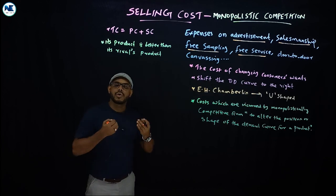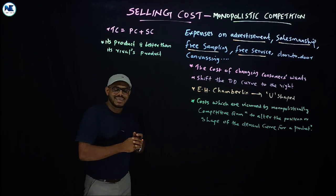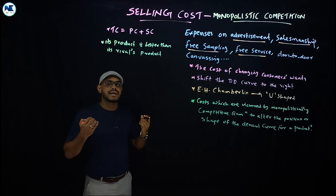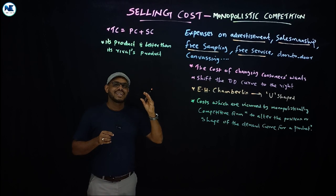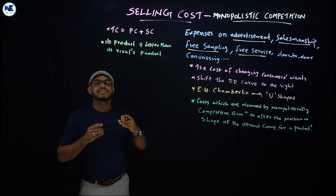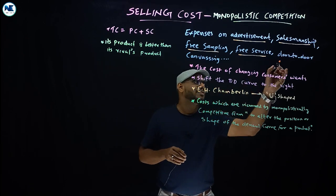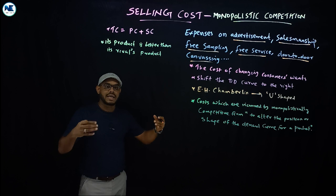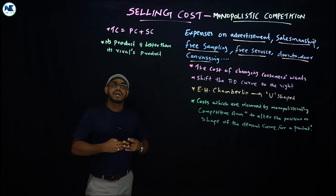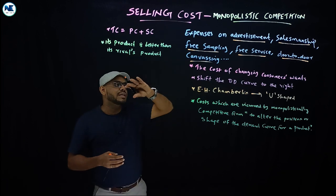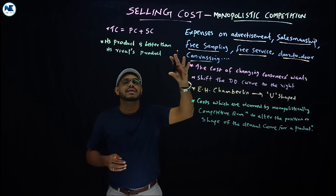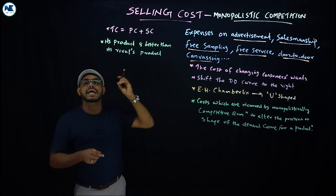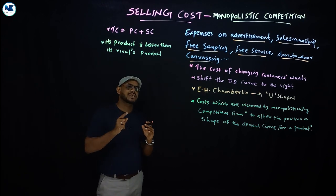As we discussed in the previous video about differentiated products, the product is unique, superior. Through price reduction and selling cost, firms promote sales. Similarly, door-to-door canvassing is another form of selling cost. Selling cost is one of the important features or characteristics of monopolistic competition.